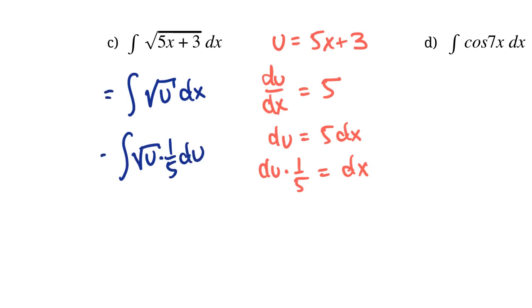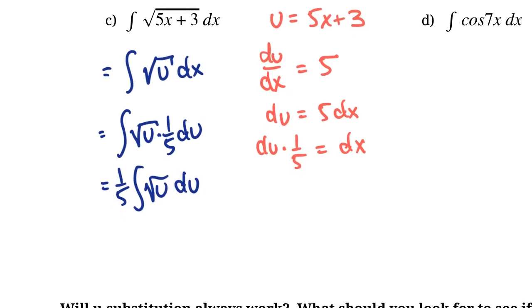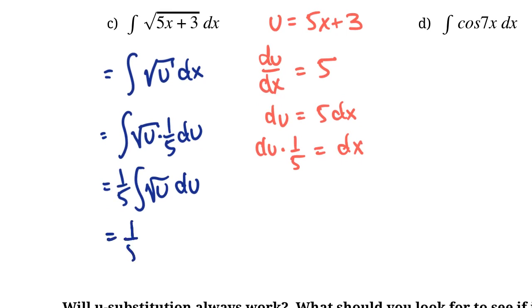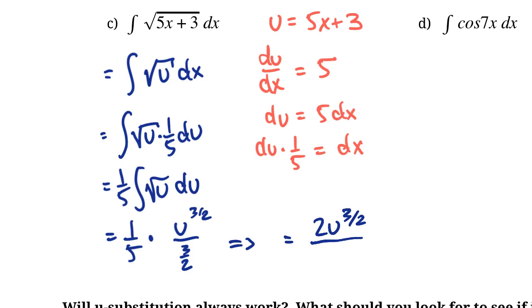So now we have something a lot easier to simplify. That's going to be 1/5 times the integral of √u — remember, √u is just u to the power of 1/2. So when we take the integral, we raise it by 1 to get u to the 3/2, divided by 3/2. Now we can simplify this — moving that fraction to the top, we get 2u^(3/2) over 5 times 3, which is over 15.